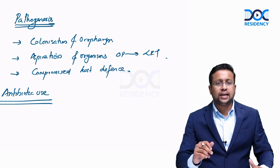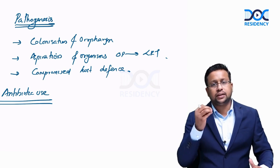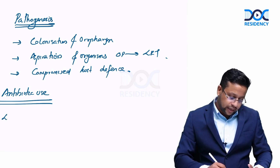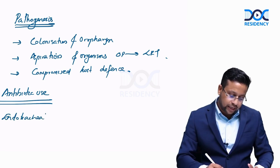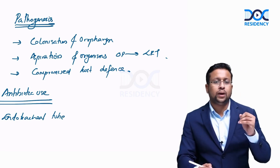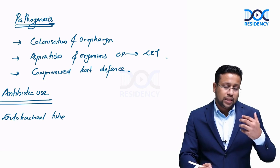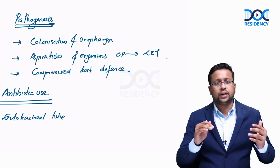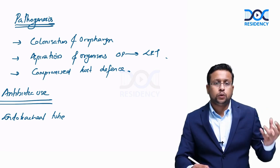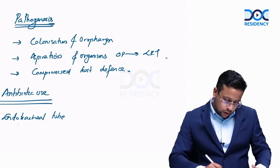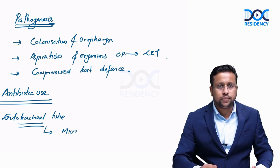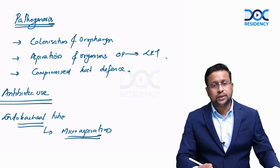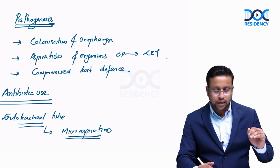Once organisms are colonized there, there are many ways they can enter the lower respiratory tract. The most important risk is the endotracheal tube itself. The endotracheal tube bypasses the normal mechanisms that prevent aspiration — the normal mechanisms by which the lung is protected from infection. While the endotracheal tube prevents large-volume aspiration, there is always a risk of micro-aspiration, especially during suctioning of the endotracheal tube.